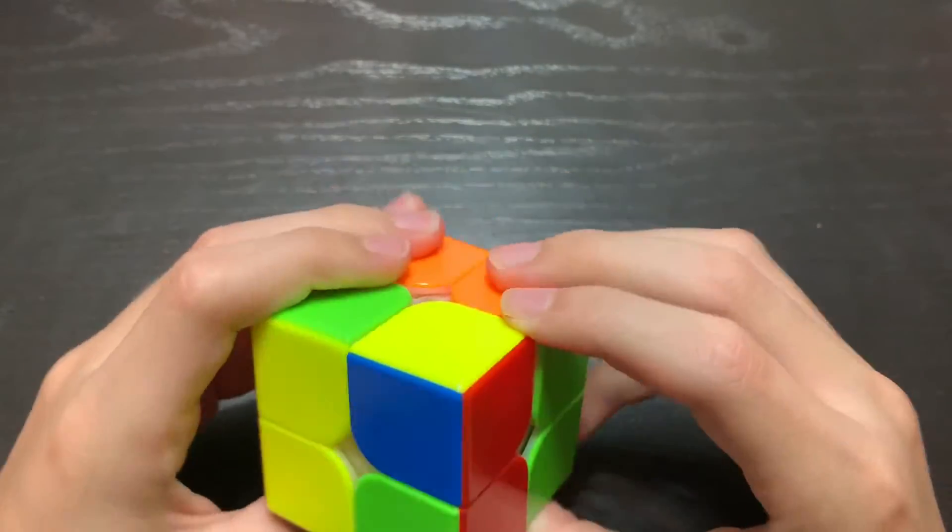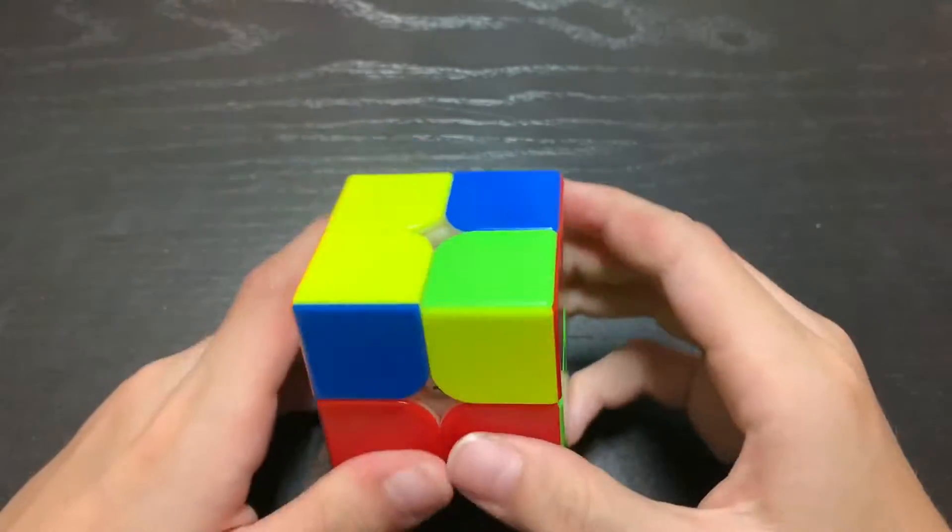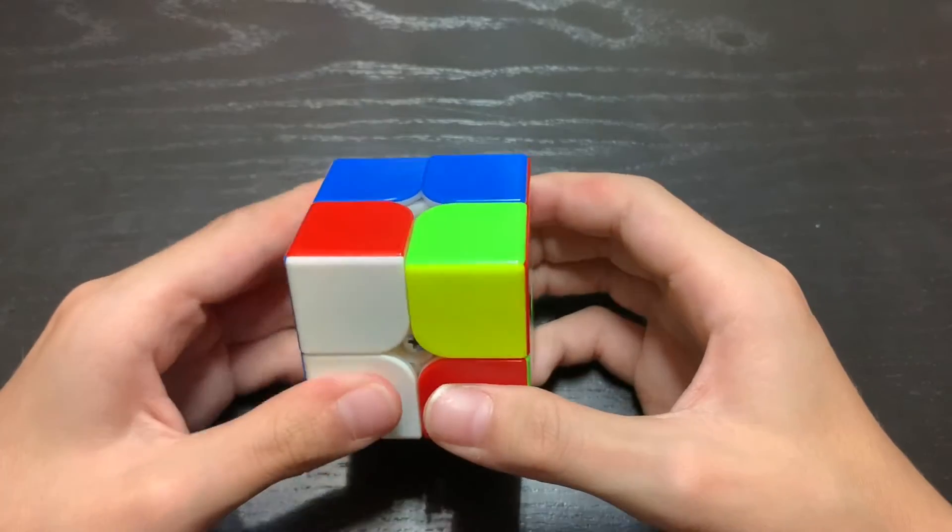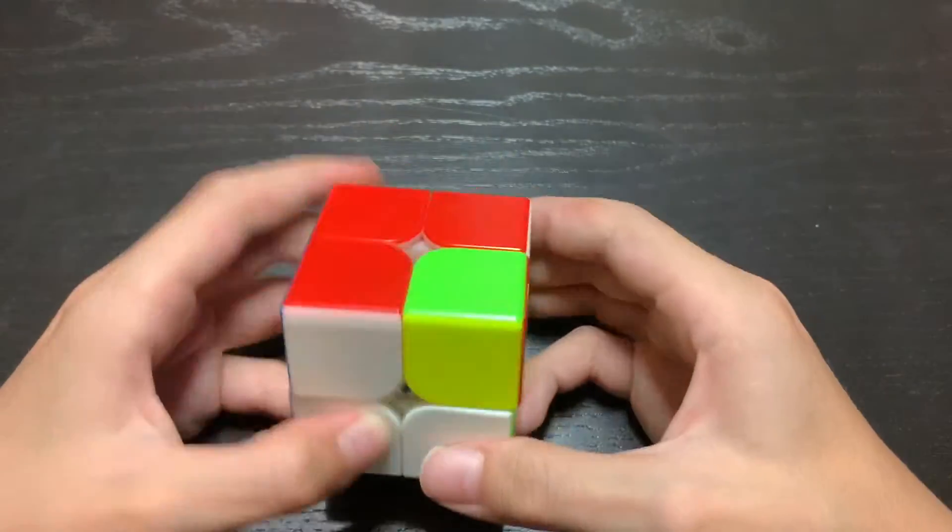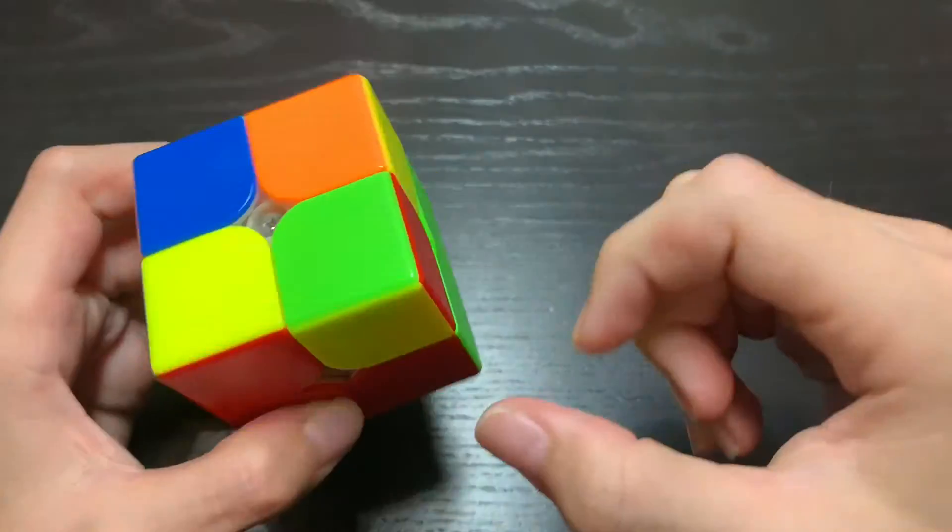So now I've done the algorithm once, and the corners are still not solved. So I'll do it once more. And now they are all solved.